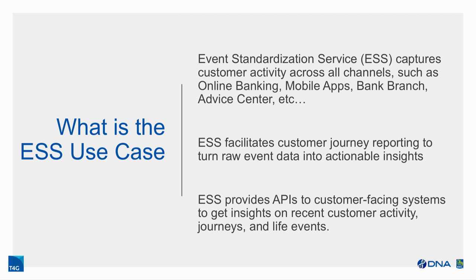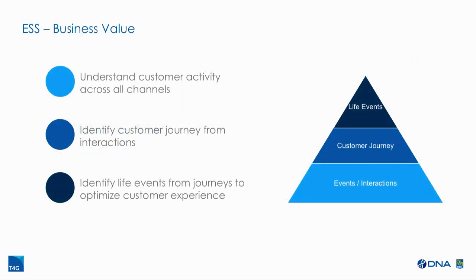Last year, RBC partnered with T4G to build a new event service, ESS, to address all the pain points of the old system and capture all events across all channels now and into the future. One of the top priorities in 2018 at RBC is to link online and offline customer activities to get a holistic view of their journey. The goal is to turn raw events into actionable insights that improve customer experience and the bank's bottom line — constructing customer journeys from interaction data to predict life events, enabling more relevant offers and geo-targeted recommendations.